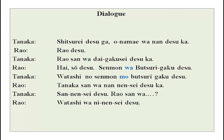Rao desu — the answer is Rao desu. Rao-san wa daigakusei desu ka? Daigakusei is a university student — dai means big, a big place of learning. Hai, so desu — so desu means yes, that is right. Senmon wa butsurigaku desu — butsurigaku is physics. Watashi no senmon mo butsurigaku desu.